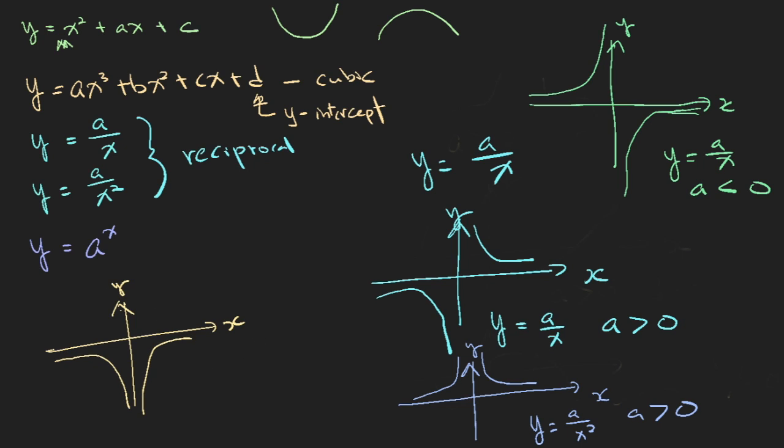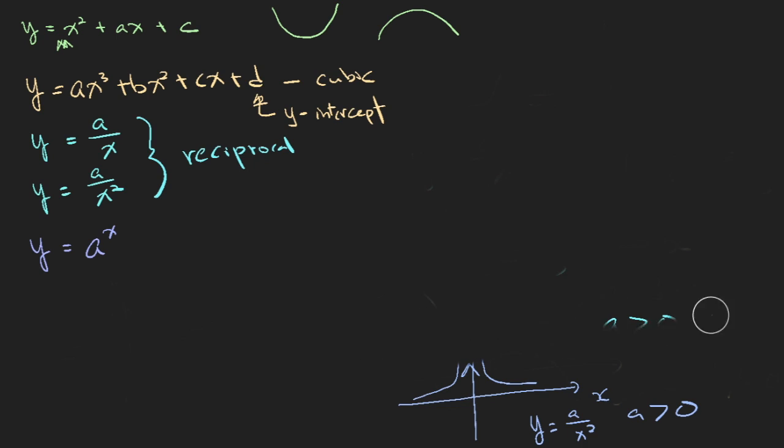And finally, let's take a look at the exponential. So this may be the most famous of them all, where it looks like this. Now this is the y equals ax graph. And at x equals 0, y is always 1.